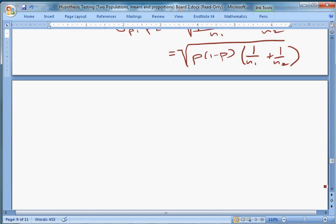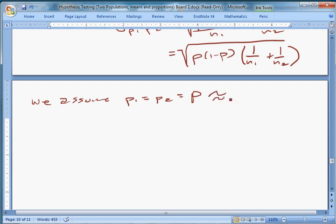Okay. So under the null that they're equal, we assume that the overall population is equal across the proportions. But we don't know what it is, right? So we assume that P1 equals P2 equals P, which is the true baseline population proportion. But we don't know what this is. So we estimate this with what we call P bar, which is the pooled estimator.